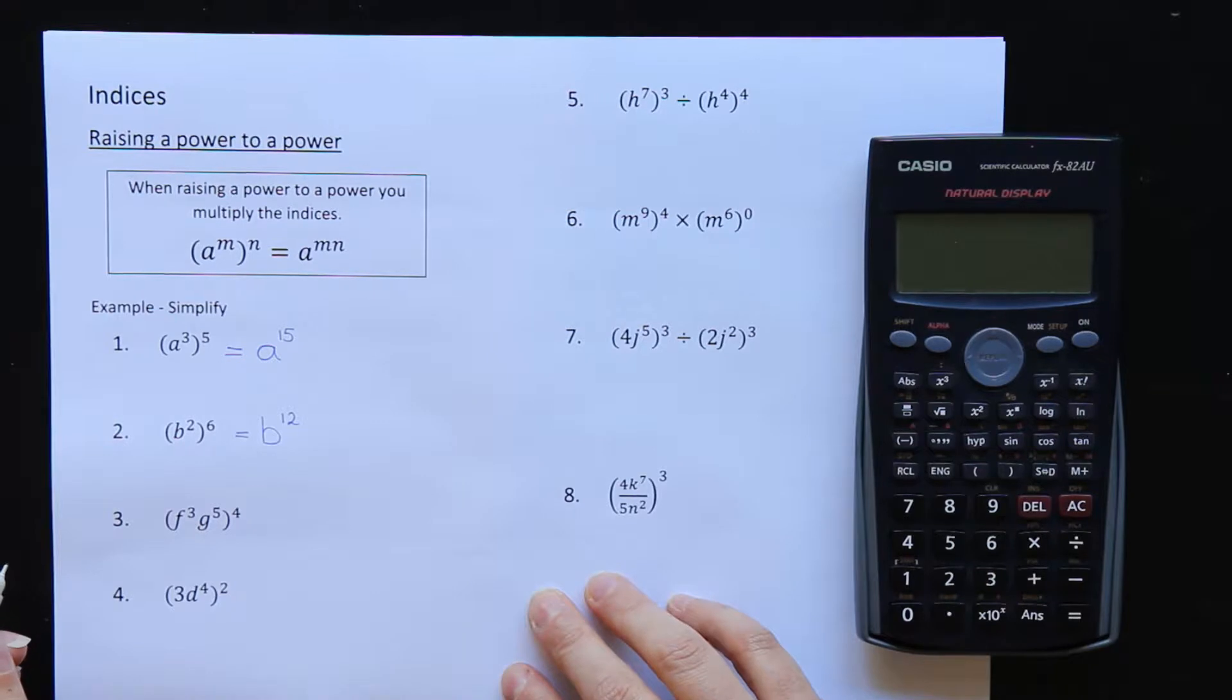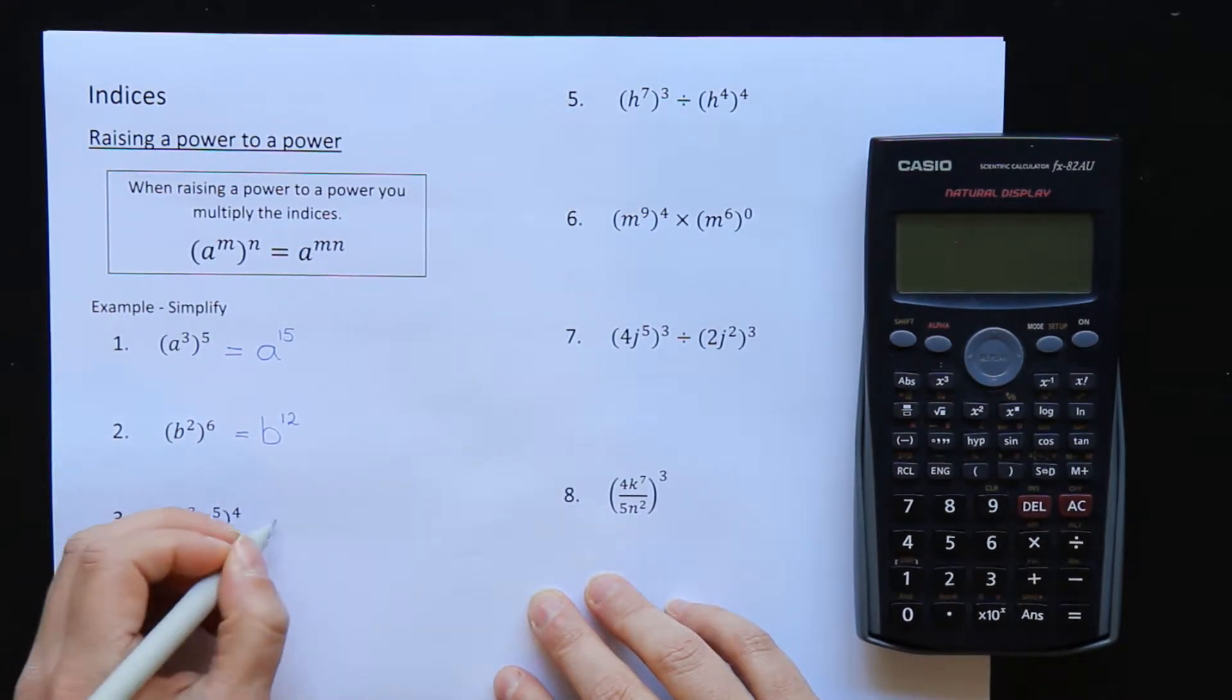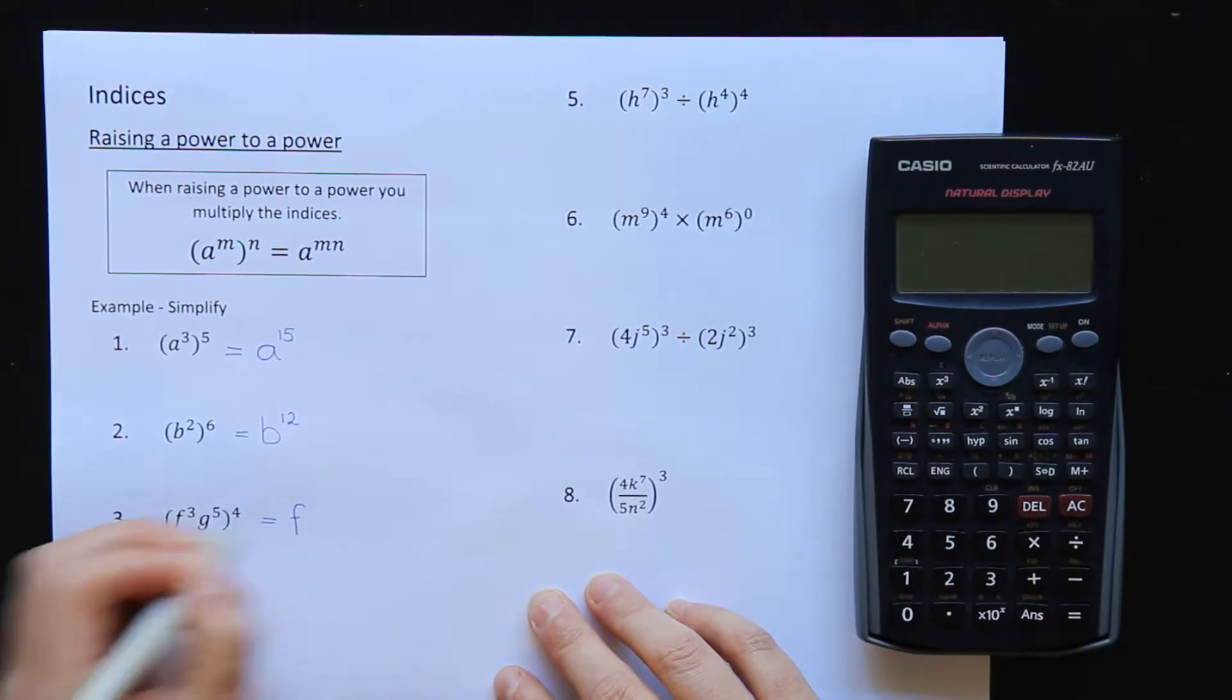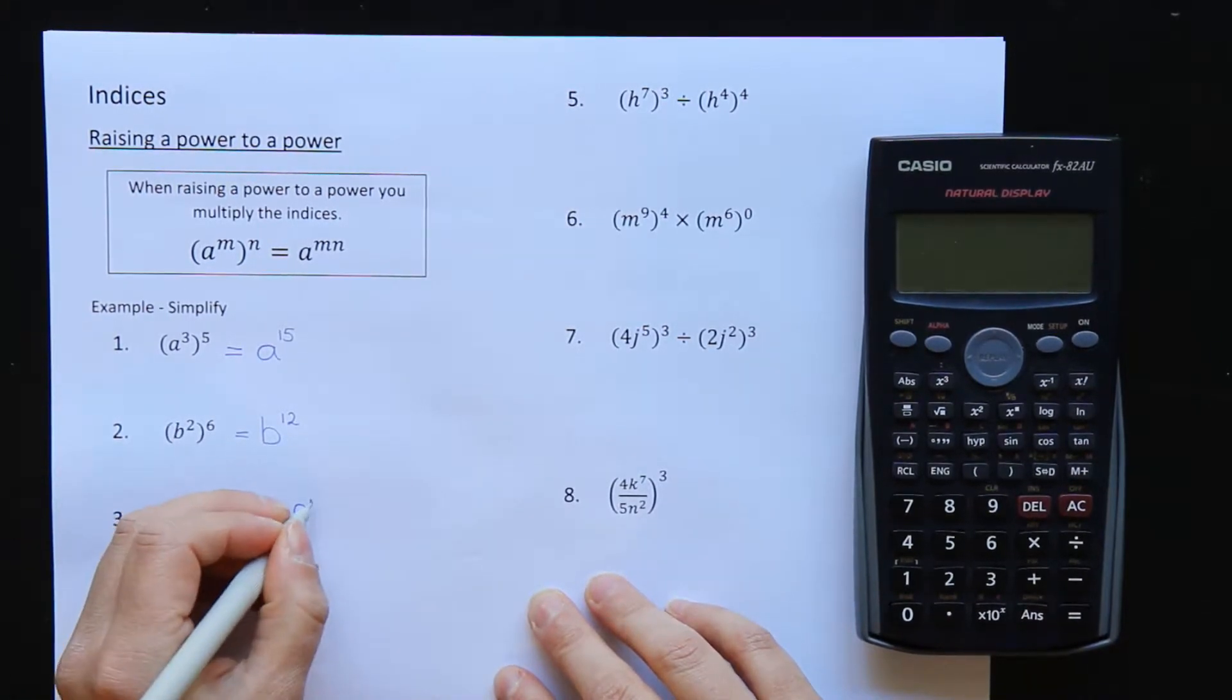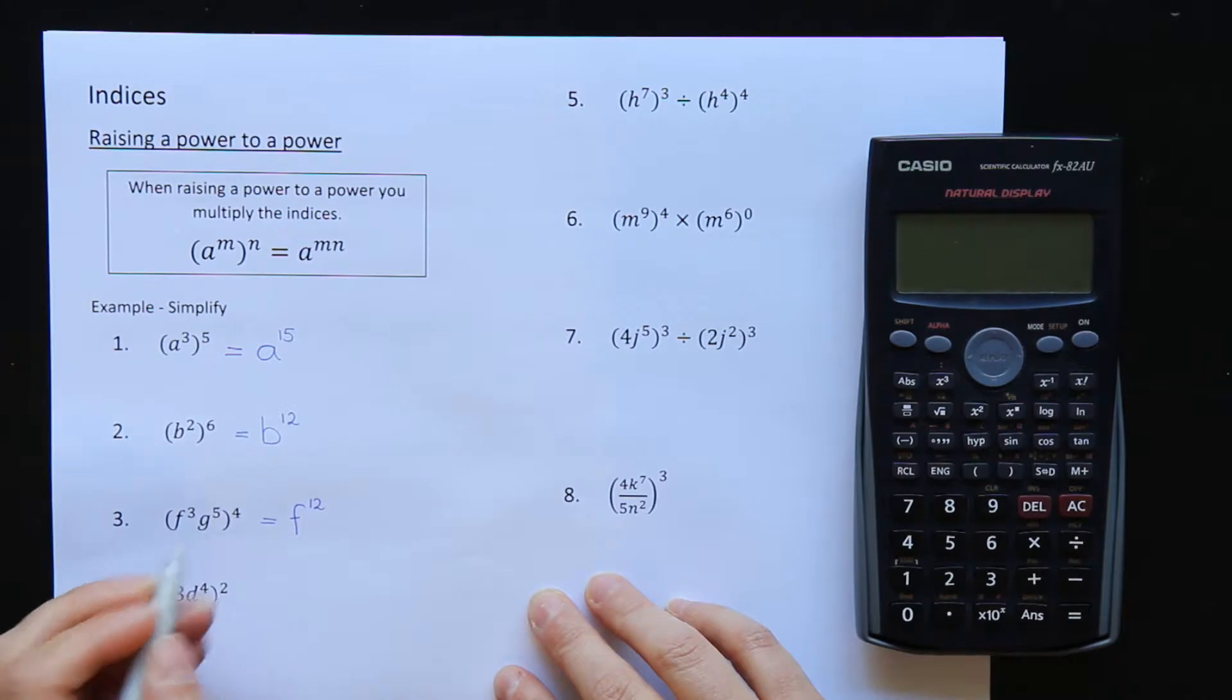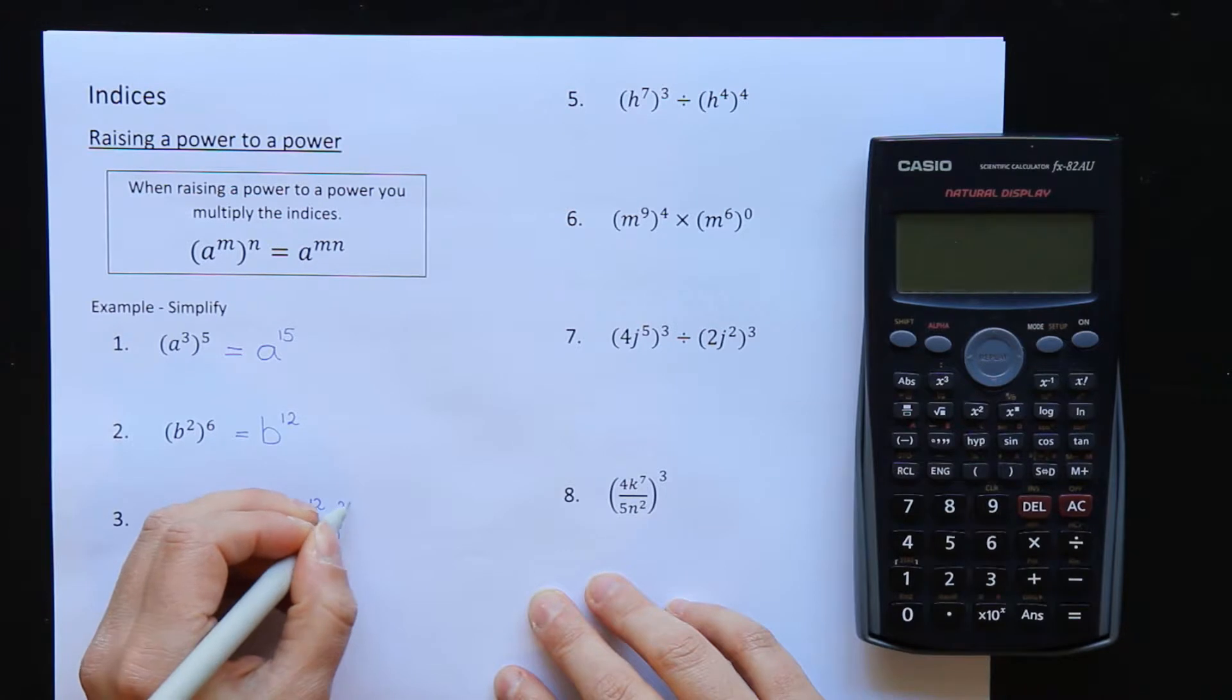Now there can be more things in the brackets. This has got two terms in there. I just do each of them separately. So f cubed to the power of 4. f is my base for the first one. 3 times 4 is 12. And my second letter here, g is the base. 5 times 4 is 20.